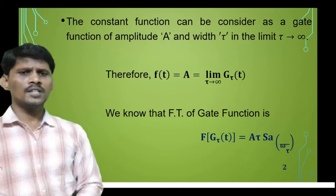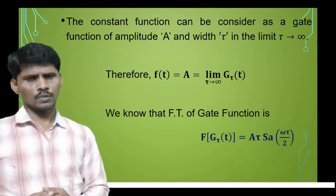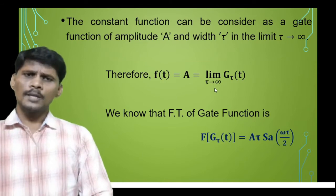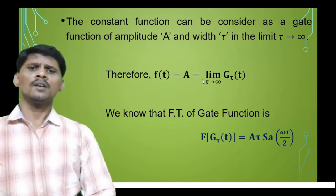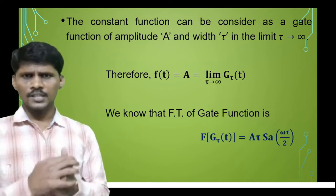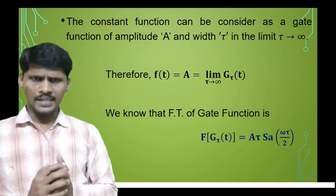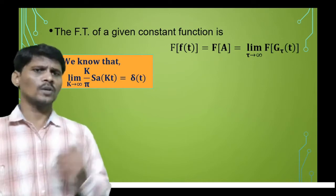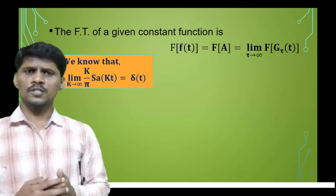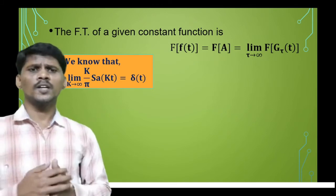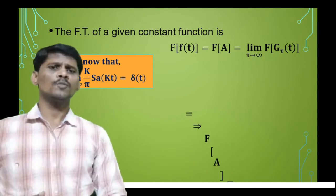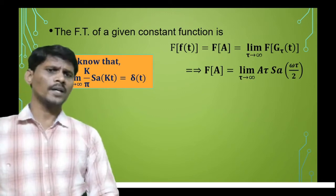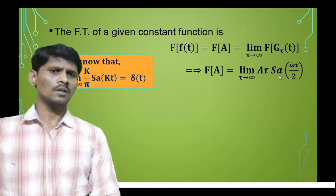We know that the Fourier transform of a gate function is A·τ·sinc(ωτ/2). In the equation where f(t) equals A, which equals the limit as τ→∞ of g_τ(t), we apply the Fourier transform on both sides. The Fourier transform of a constant equals the limit as τ→∞ of the Fourier transform of the gate function, which is A·τ·sinc(ωτ/2). Now we need to simplify the right-hand side of this equation.